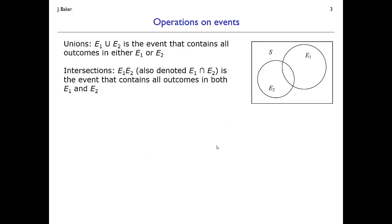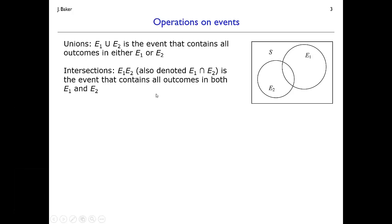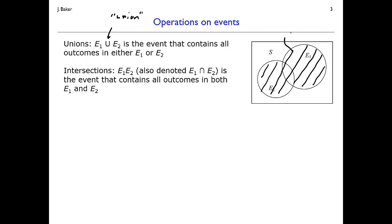We can perform operations on those events. First, we can think about a union of two events — that is the combination of events contained in either E1 or E2. We use the open cup symbol to denote a union. Graphically on the Venn diagram, the union of E1 and E2 is the region shaded in black: all events that fall inside E1, inside E2, or in both. This shaded black region is E1 ∪ E2.